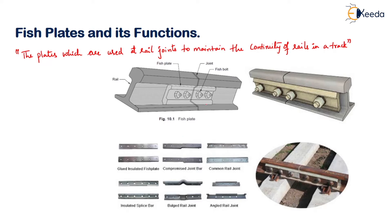If you observe, this is your rail portion. This is the first rail portion, this is the second rail portion, and there is a joint here. In order to join these two rails, we are using a plate called a fish plate. And in order to connect the fish plates, we have fish bolts, which we will study at a later stage.